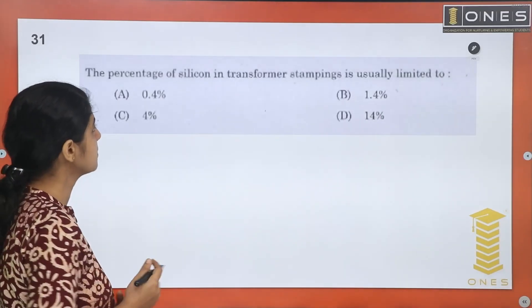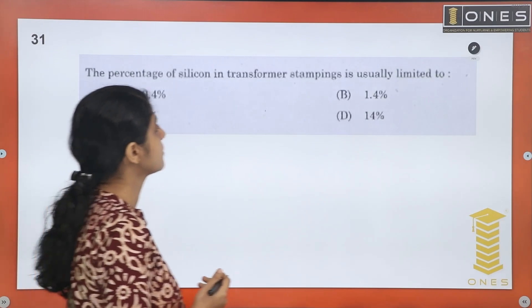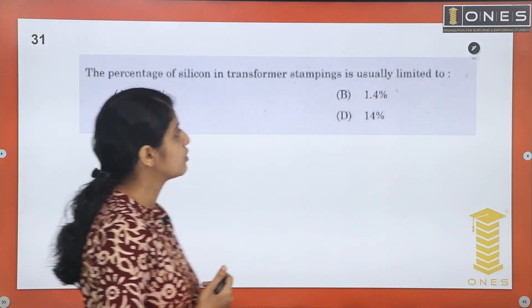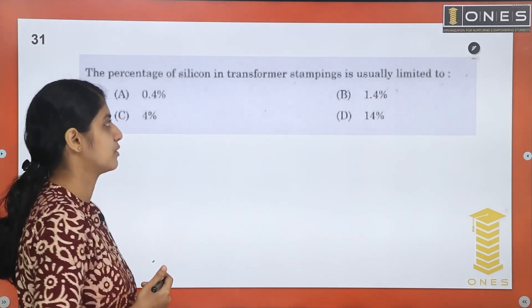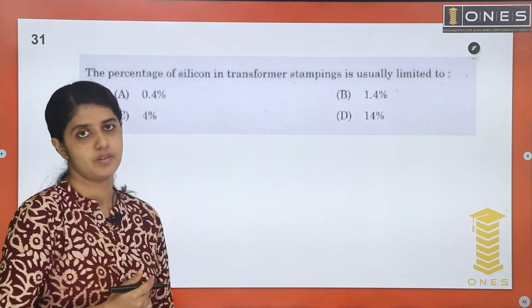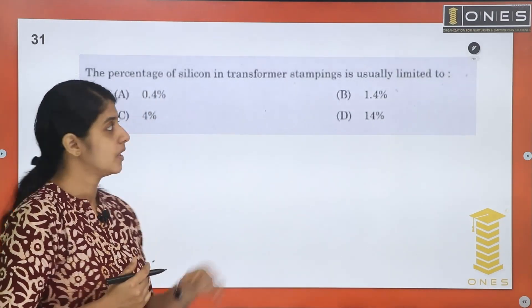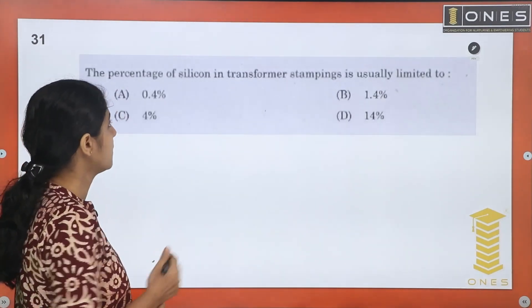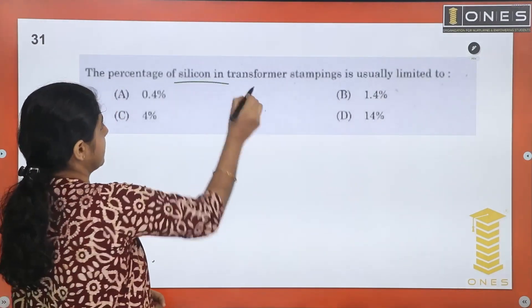The percentage of silicon in transformer stampings is usually limited to — this is the percentage of silicon we are examining.